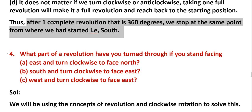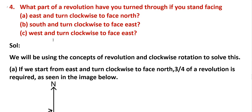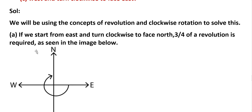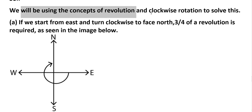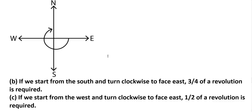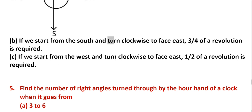Fourth problem: what part of a revolution have you turned through if you stand facing east and turn clockwise to face north? Solution: if we start from east and turn clockwise to face north, three-fourths of the revolution is required. B: if we start from south and turn clockwise to face east, three-fourths revolution is required.